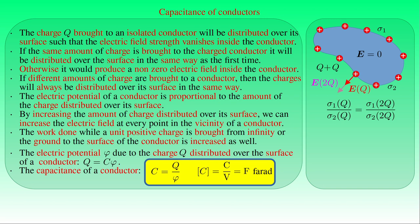Since 1 farad is a large value, normally its submultiples are in use, such as microfarad, nanofarad, and picofarad — that is, 10 to the minus 6, minus 9, and minus 12 farads. Capacitance is independent of the charge and the voltage, but it depends on the shape and the size of the conductor.